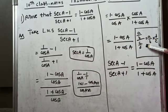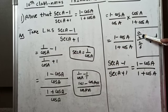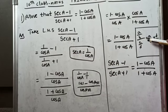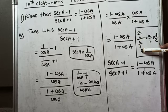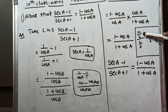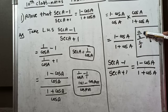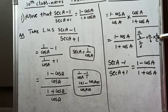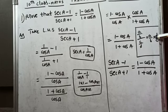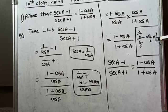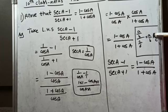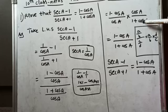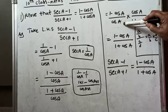Now we apply the division formula: (a/b) ÷ (c/d) = (a/b) × (d/c). That is, the denominator fraction goes to the numerator as its reciprocal.